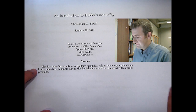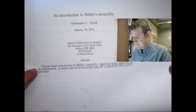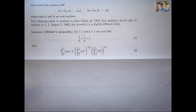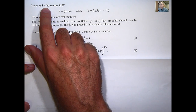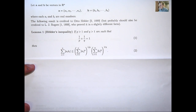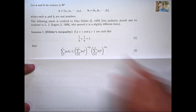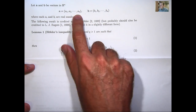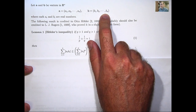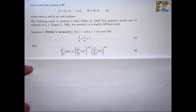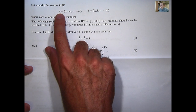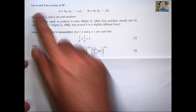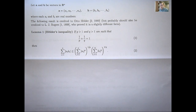So let's get started. Let boldface A and boldface B be vectors in R^N. Here I've written them in their component forms using rows rather than columns just to save a little bit of space. Whenever you see boldface letters throughout this presentation, I mean vectors in R^N.